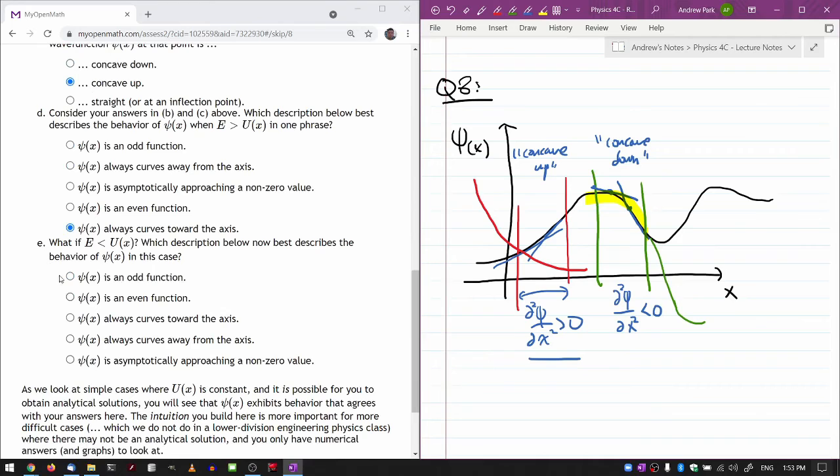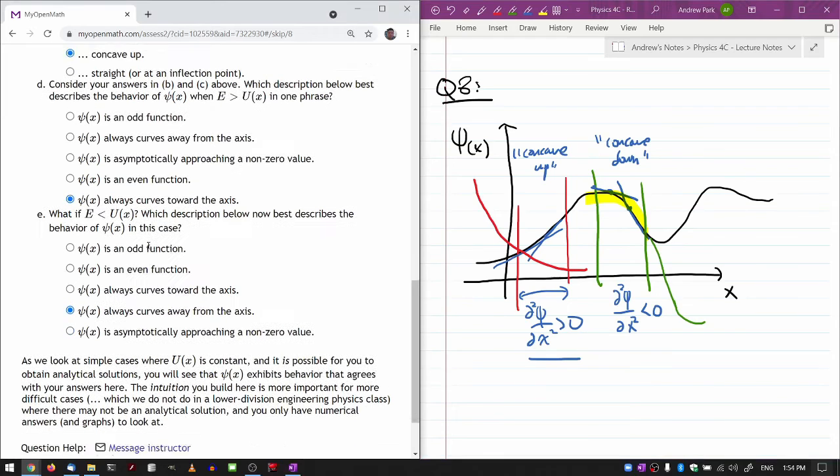With all of that in mind, the answer here is basically opposite of the answer in D. Psi of x always curves away from the axis in the region where total energy is less than the potential energy.